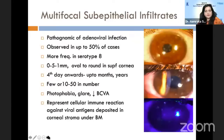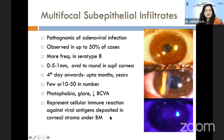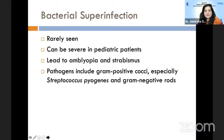Once the acute phase of adenoviral keratoconjunctivitis is over, it can go on to a chronic phase with multifocal sub-epithelial infiltrates seen in almost half of cases, more frequently in serotype 8. They are about 0.5 to 1 mm, oval to round, in the superficial cornea. They may appear from the fourth day onwards and may remain chronically for months or even years, generally 10 to 15 in number. Bacterial superinfection can occur, more seen in children, and can lead to amblyopia and strabismus.